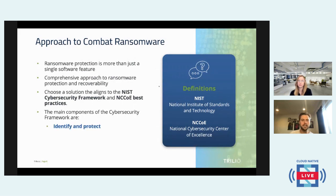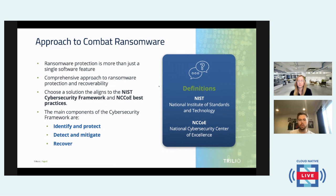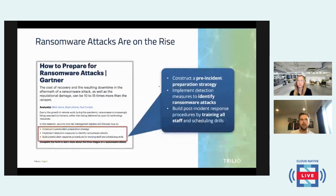Many organizations, Trilio included, have chosen to follow the NIST and NCCOE solutions for best practices. We've found that these two main frameworks boil down to three categories: first, identify and protect; second, detect and mitigate; and third, recover. Identify and protect means searching for any vulnerabilities within your system. Detecting and mitigating means detecting malicious actors, malware, or ransomware within your core-to-edge architecture. Recoverability means having a contingency plan to recover data without paying the ransom after an attack.